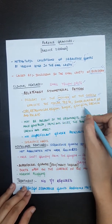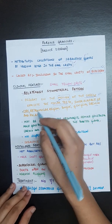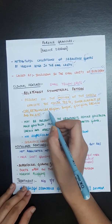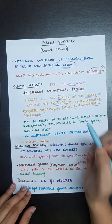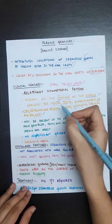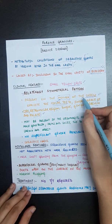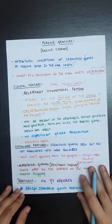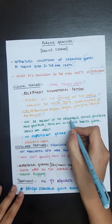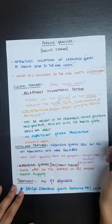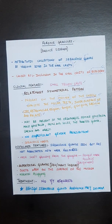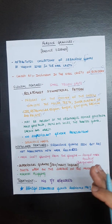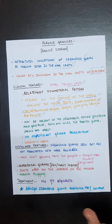Other locations include the retromolar region, tongue, gingiva, frenum, and palate, but more commonly they are present on the mucosa of the cheeks opposite the molar teeth. They may also be present on the esophagus, female genitalia, male genitalia, palms, soles, the parotid gland, larynx, and orbit. So these are the locations where these granules can be present.